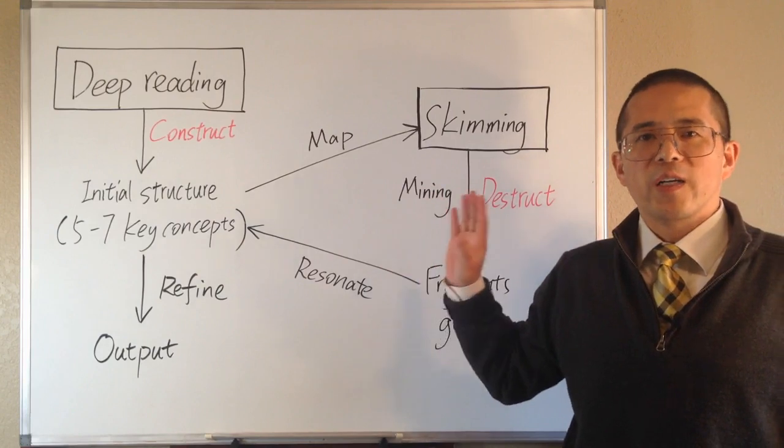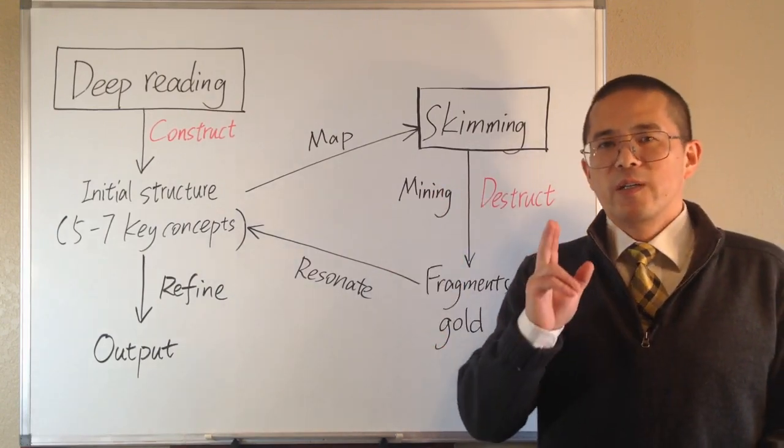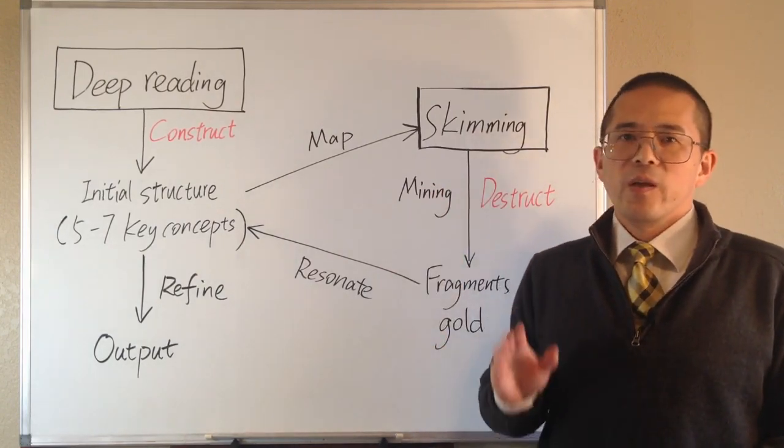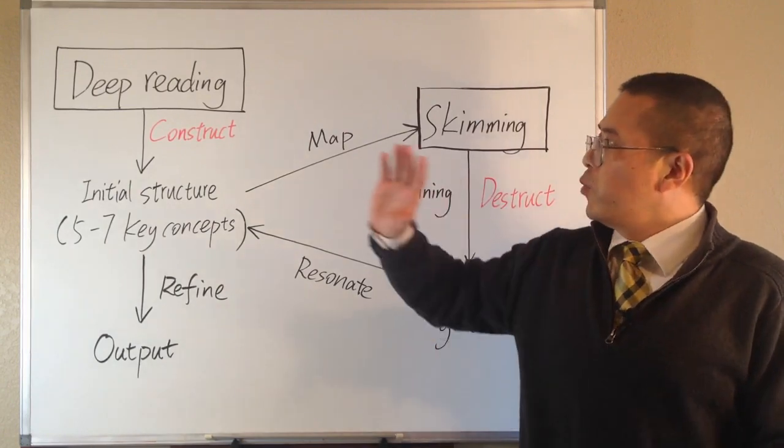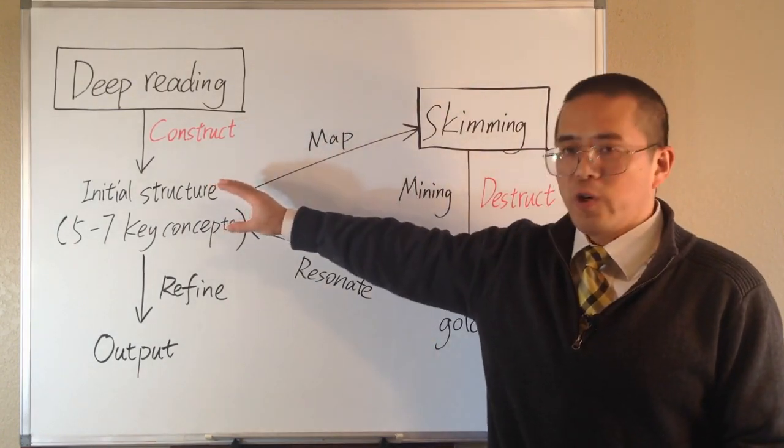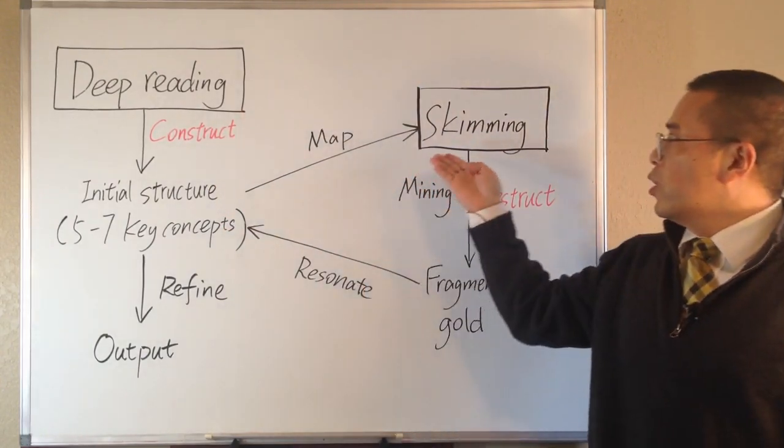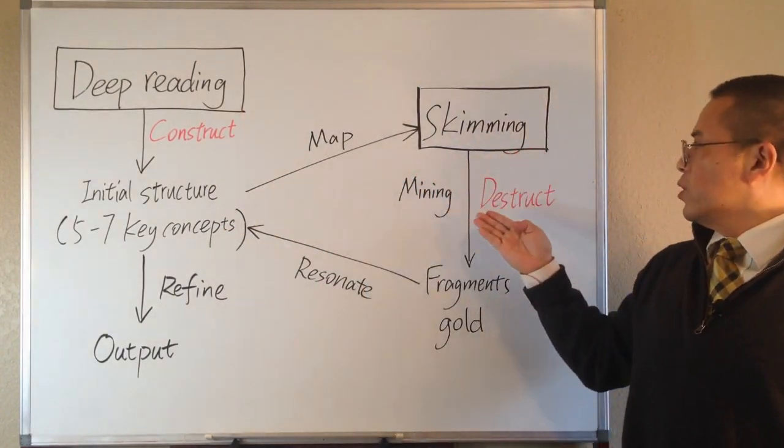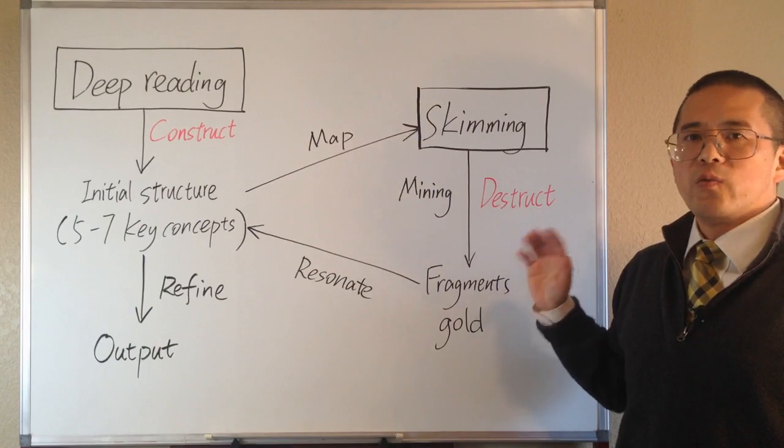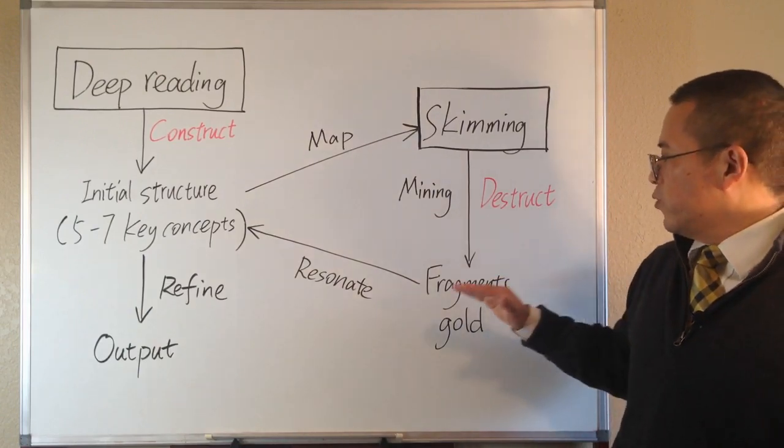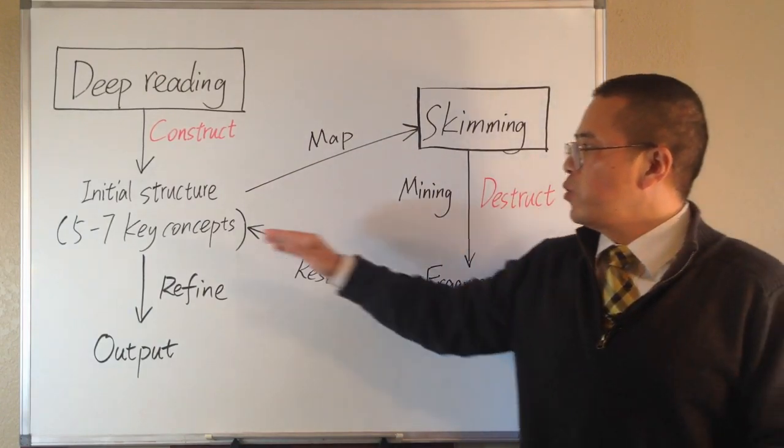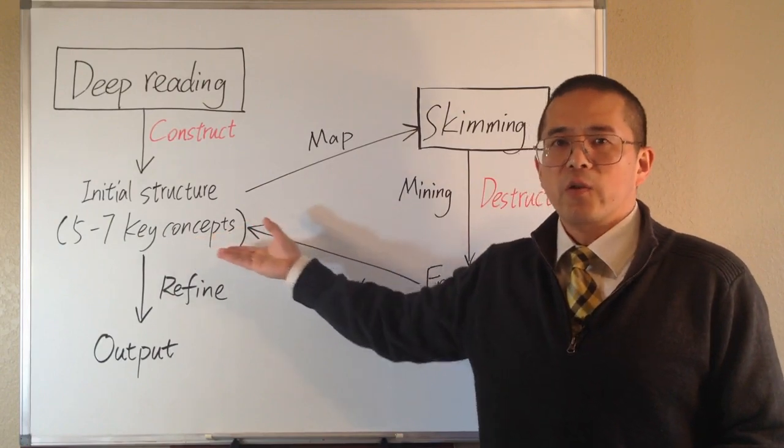This is what I call a structure method for reading or skimming. Before we start skimming, we construct an initial structure in our brain through deep reading. During skimming, we deconstruct what we are reading. We just search for fragment information that we can use to improve our structure.